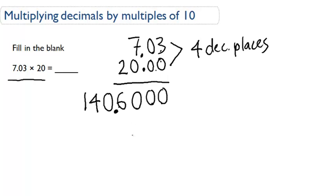What I can do is multiply, so this is a multiple of 10. So what I do is I multiply this by 2. So 2 times 3 is 6, 2 times 0 is 0, 2 times 7 is 14.